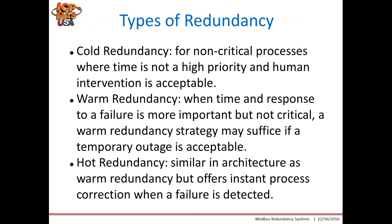There are three types of redundancy. Cold redundancy is for non-critical processes where time is not a high priority and human intervention is acceptable. As an example, if a press machine fails, the automation system should notify the operator and issue an alarm. A simple response may be to cut the power to the power supply and display a red alarm light. The operator can resume operation by simply starting another unit and requesting service for the failing unit.